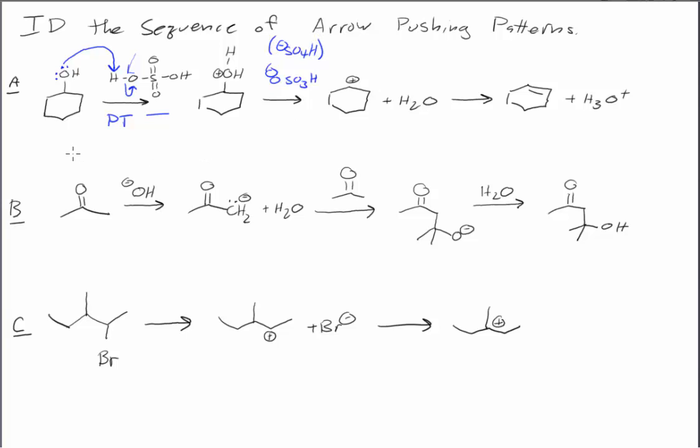So that's a proton transfer step. And now we have this structure here that almost looks like we have water attached to the ring. And indeed, that's what we have because we see in the next step, we've lost the water, and we've created a cation on the ring. And so the next step involves a single arrow push. And since we're losing something, we're breaking a bond and creating two species, that's loss of leaving group.